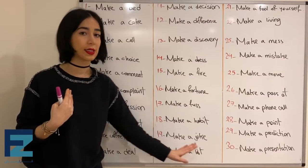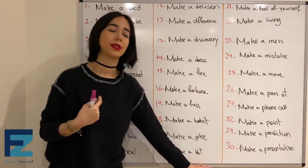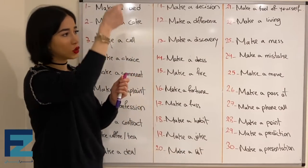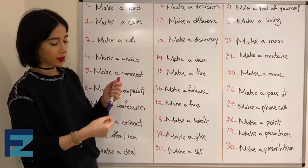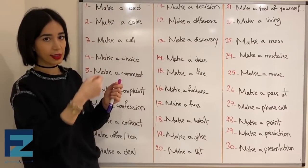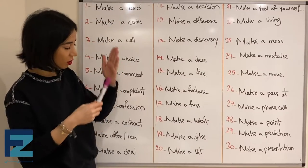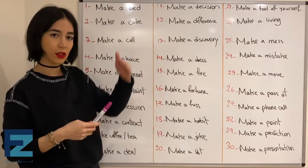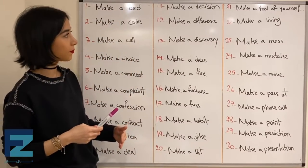Number twenty: make a list. Make a list means to list something — یه چیزی رو لیست کردن، لیست درست کردن.